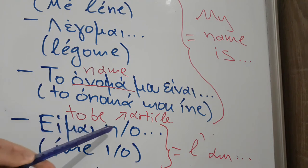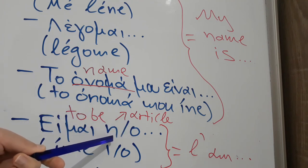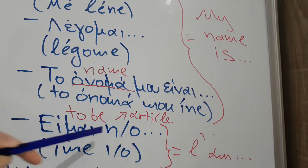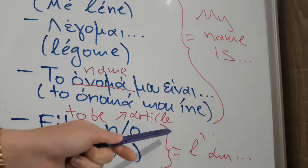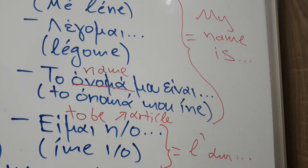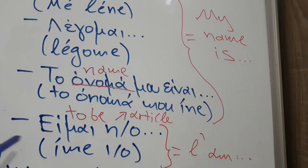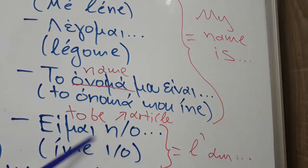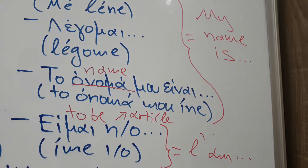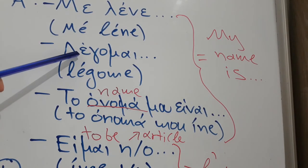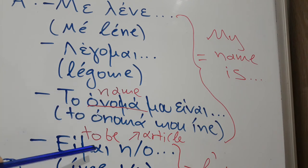Let's see the most simple answer you can give when someone asks your name. We use the verb to be and the article — the female article and the male article — and it means I am. In English we do not use the article; we say I am George. In Greek we must use the article. For example, είμαι η Χρυσάνθη — I am Χρυσάνθη — for a female person. For a male, είμαι ο Γιώργος — I am George. So the ways to answer are: με λένε, λέγομαι, το όνομά μου είναι, είμαι η / είμαι ο.